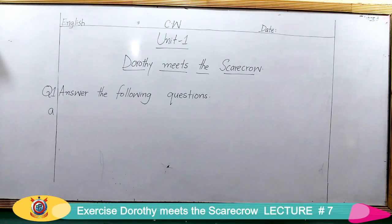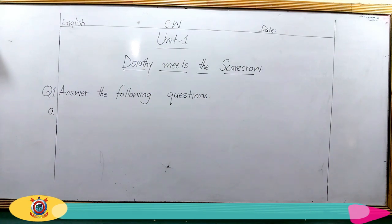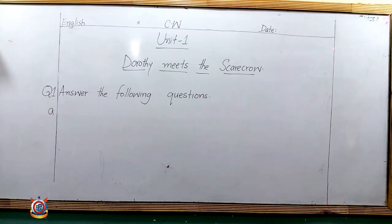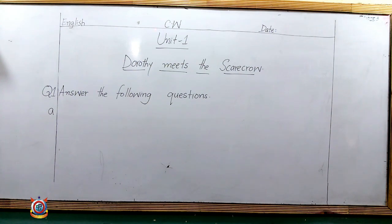I hope that you are ready with your notebooks. Before starting our work, I want to guide you about how to start your work. First of all, you have to draw a margin line on the right side of your page. Then you will write the name of the subject on the left side. In the center, you will write CW and then you will write the date.